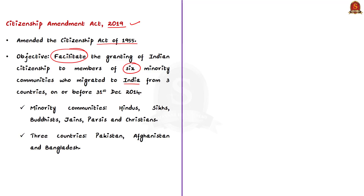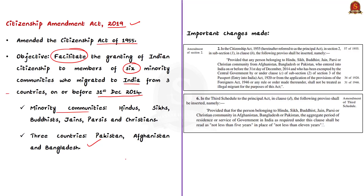Remember the cutoff date of 31st December 2014 and the six minority communities: Hindus, Sikhs, Buddhists, Jains, Parsis and Christians — from the three countries Pakistan, Afghanistan and Bangladesh. Under the amendment, persons who migrated to India without valid travel documents, or whose travel documents had expired, will be given Indian citizenship.